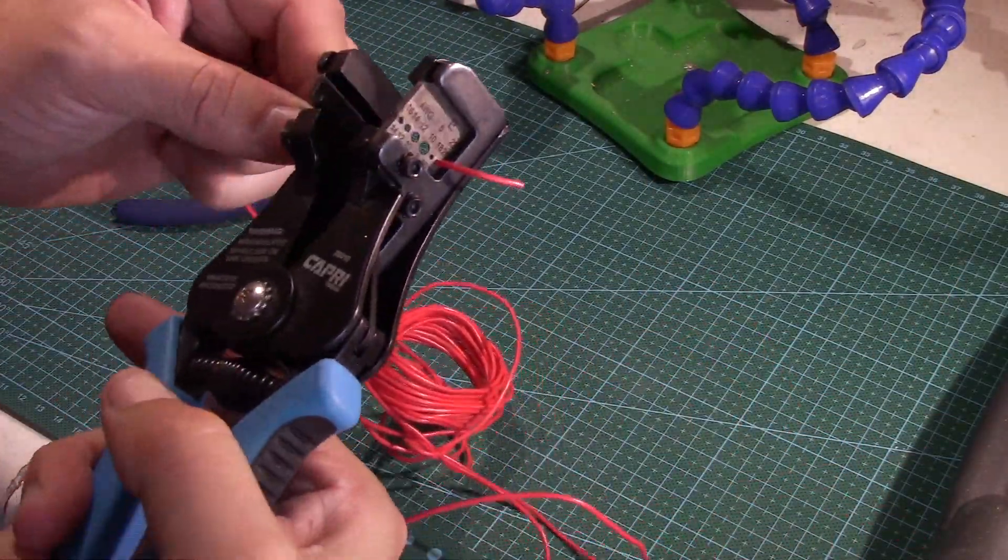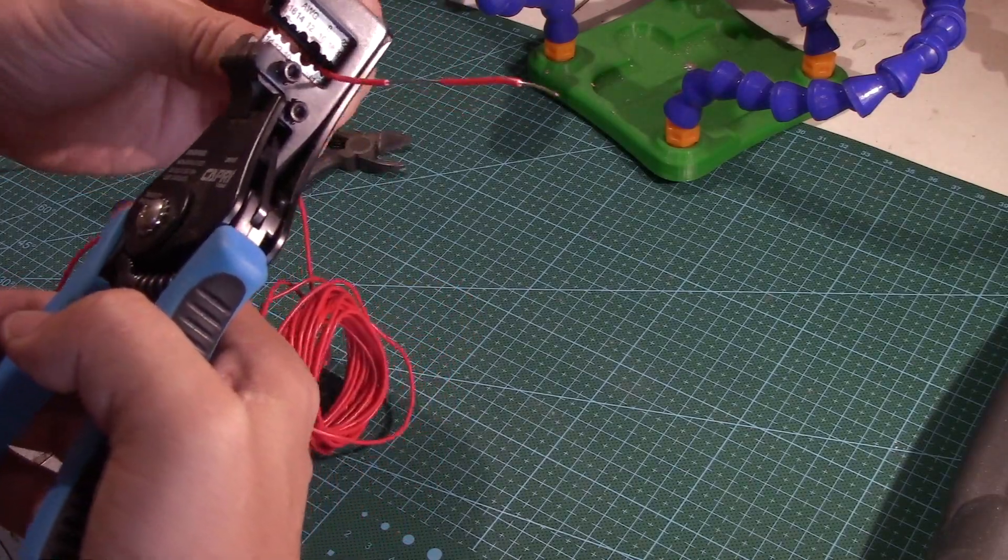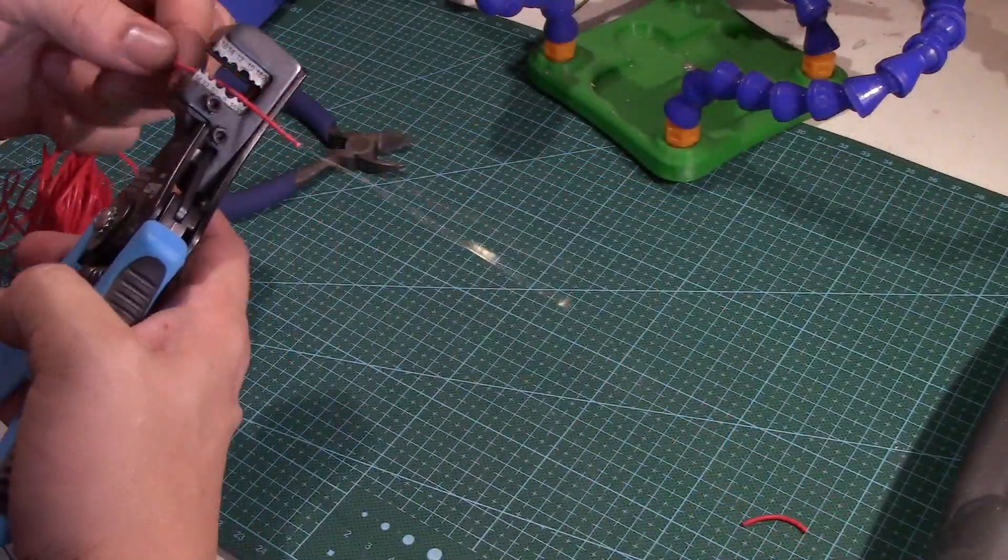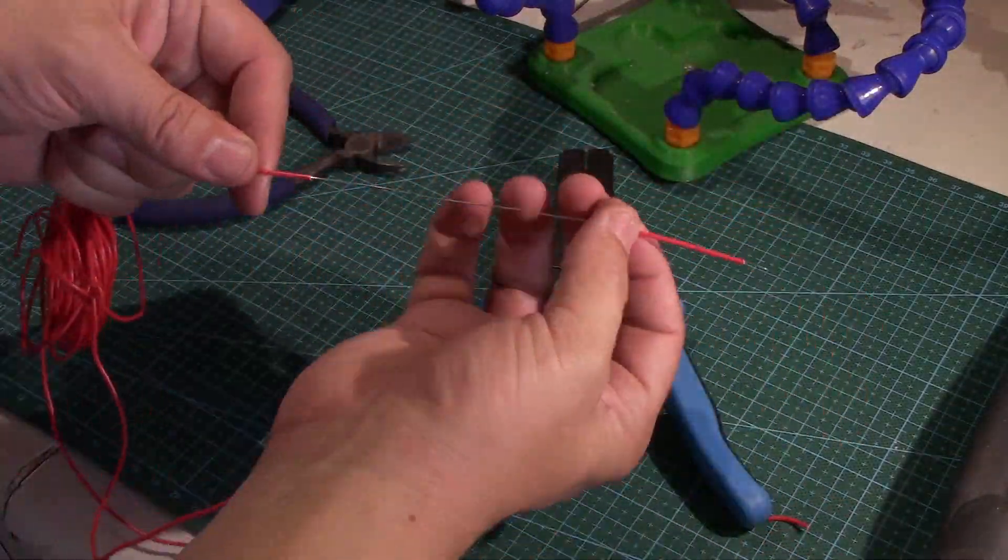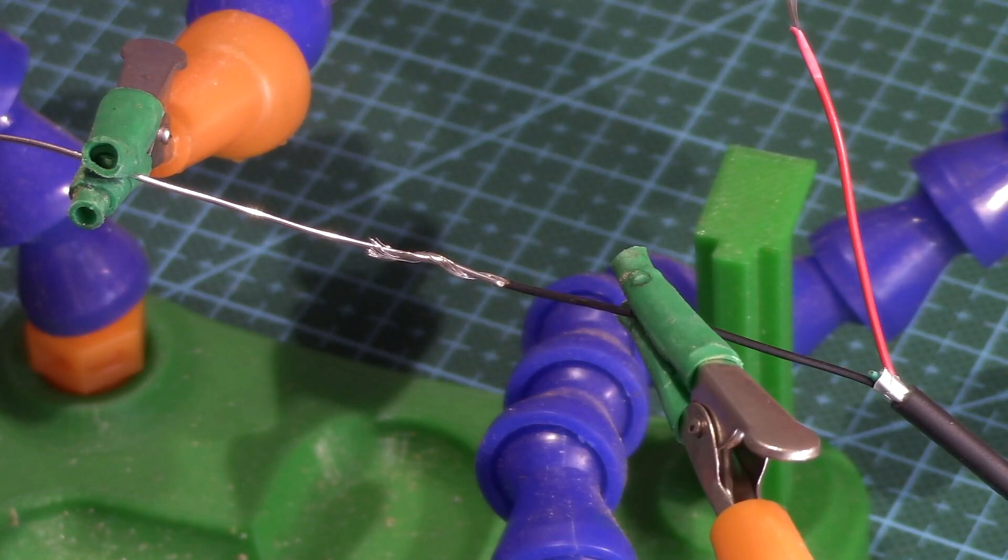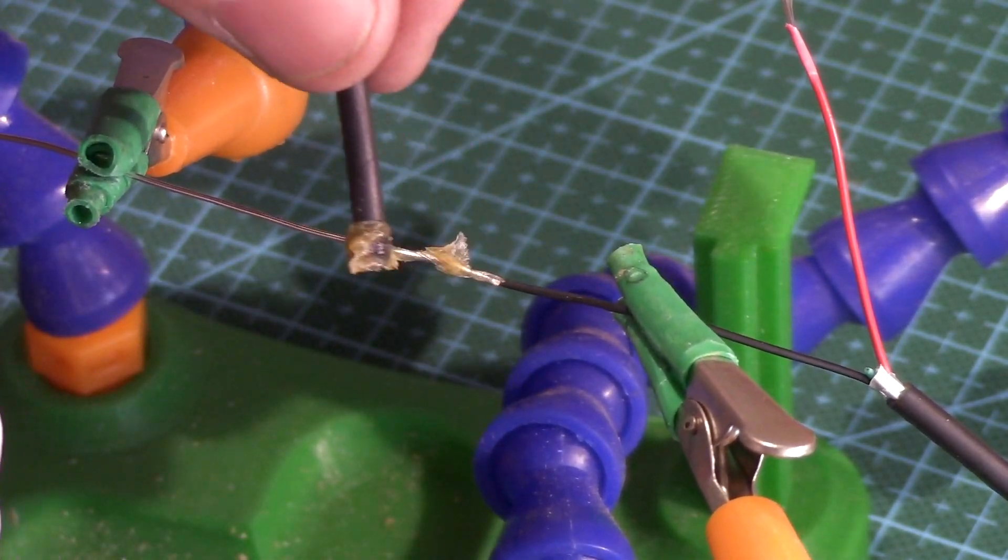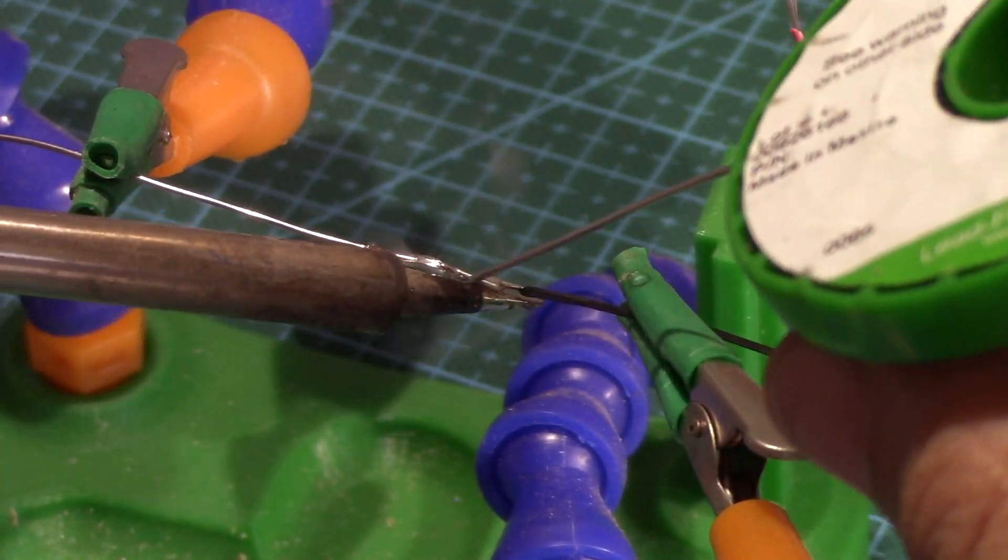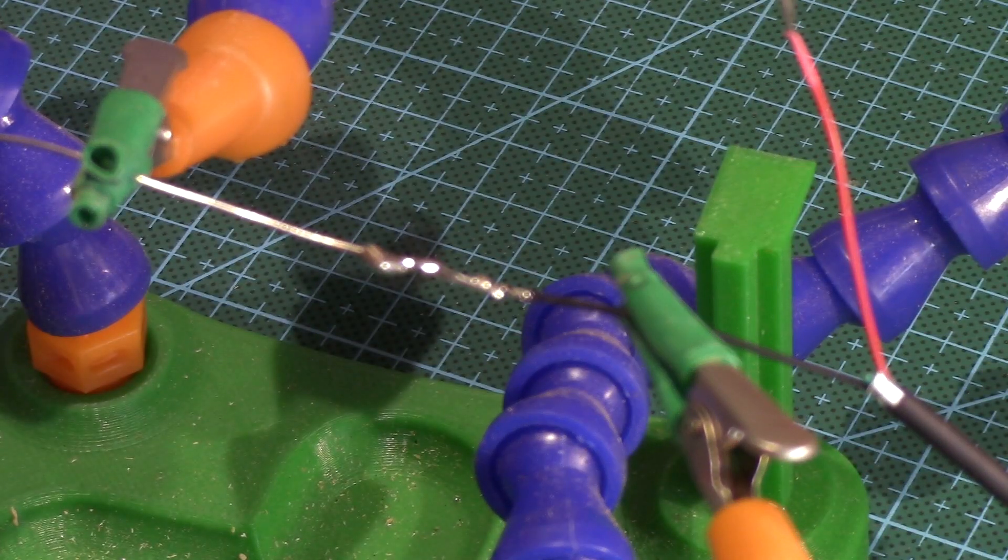From here we're going to take some solid wire and just strip off all the insulation so we have connectors to solder onto the ends. We wrap the wire to solder it in place. It can be helpful to add some solder flux to get the solder to flow more easily, and then we melt some solder on there to solder it in place.